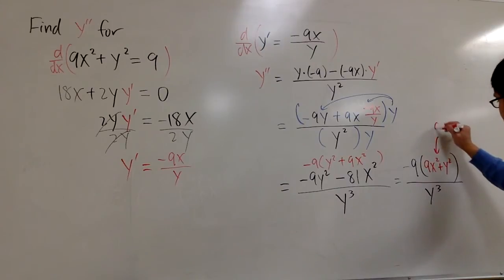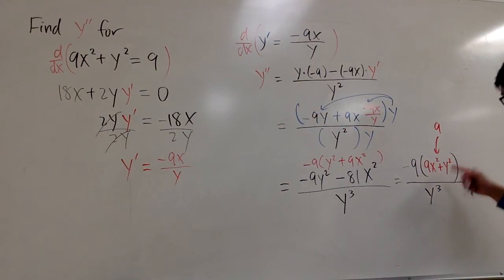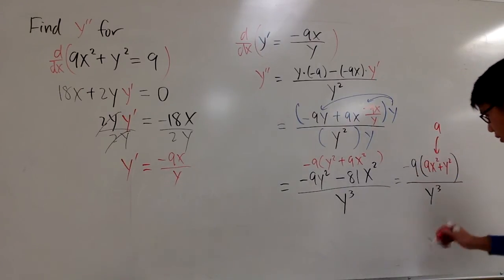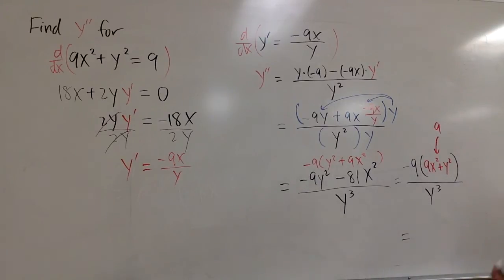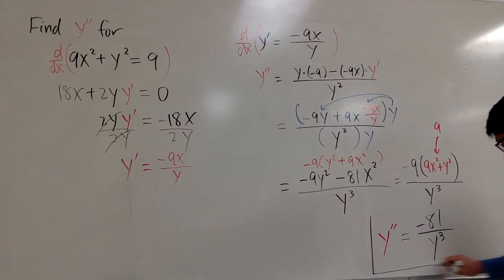So this right here, all the way from the beginning, we know it has to be equal to 9. So what we're saying is we have negative 9 times 9, and that's negative 81. Negative 9 times 9, that's negative 81 over y to the third power. And this right here, it's the second derivative that we want. That's it.